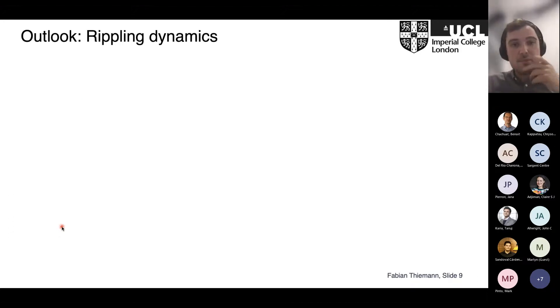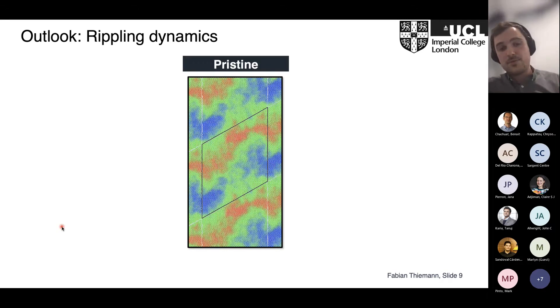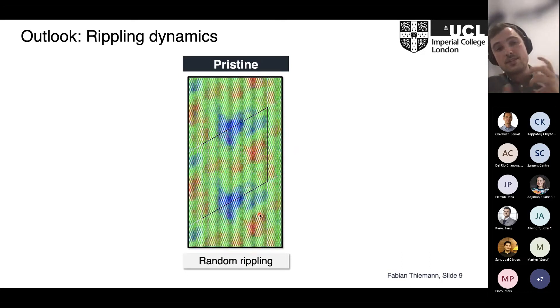Before I conclude, let me give you a quick outlook where we look at something else. So far everything was concerned with the structure and morphology, but what's also very interesting and important for applications are the dynamics of the ripples. I'm quickly showing three short videos. First for the pristine case—everything is colored according to the atomic heights. We can see that in the pristine case we have this random rippling, fluid-like motion of these waves propagating through the sheet.